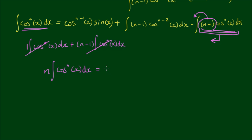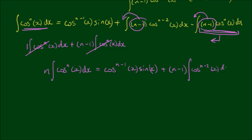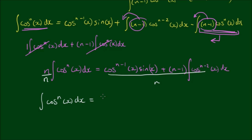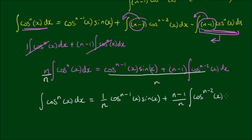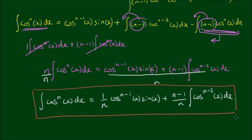The right-hand side becomes cosine to the n-1 power times sine x, plus n-1 times the integral of cosine to the n-2 of x dx. Dividing both sides by n, we arrive at the final reduction formula: the integral of cosine to the n of x dx equals (1/n) times cosine to the n-1 of x times sine x, plus (n-1)/n times the integral of cosine to the n-2 of x dx. Thus we have proven the reduction formula for the integral of the n-th power of cosine.